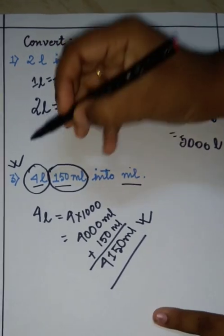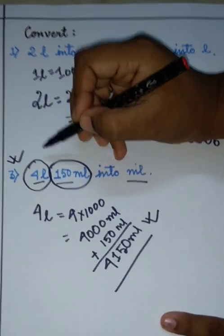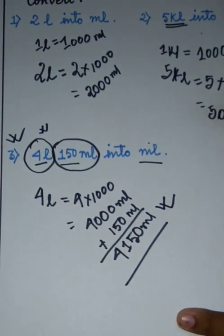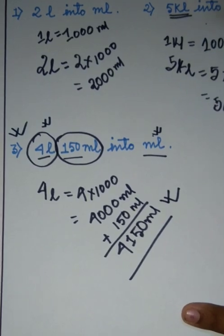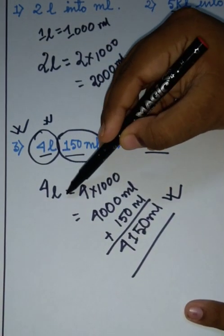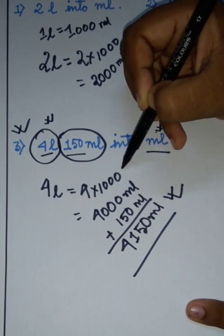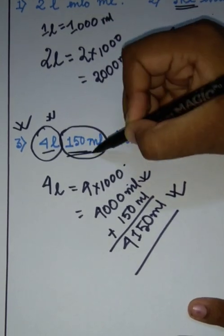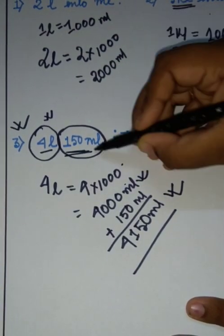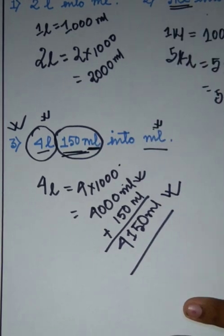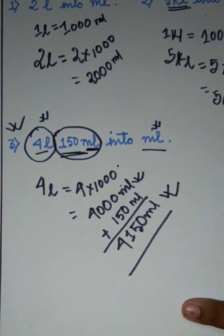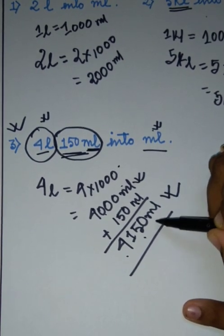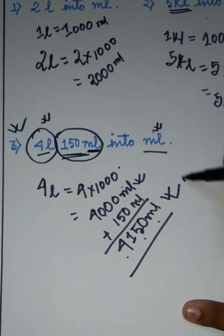Let me explain that again. First, check which unit we need to convert to — here it is millilitre. So we convert 4 litre: 4 litre equals 4 into 1000 equals 4000 millilitre. Then 150 millilitre is already in millilitre, so we do not convert it — we just add. 4000 plus 150 equals 4150. So 4150 millilitre is our answer.